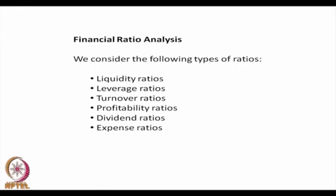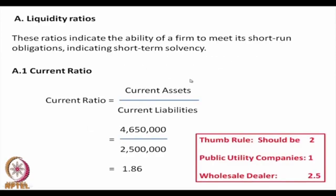There are different types of financial ratios: liquidity ratios, leverage ratios, turnover ratios, profitability ratios, dividend ratios, and expense ratios — at least 6 categories. Each category has a number of ratios under it. Let us see them one by one.